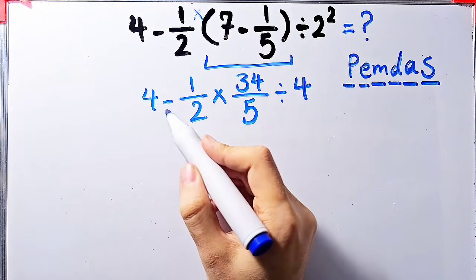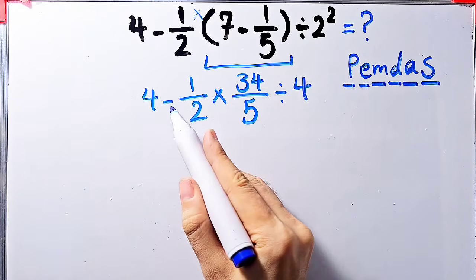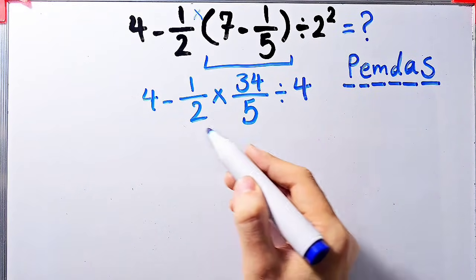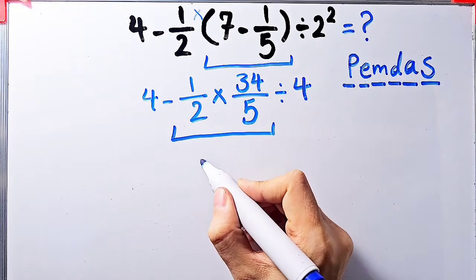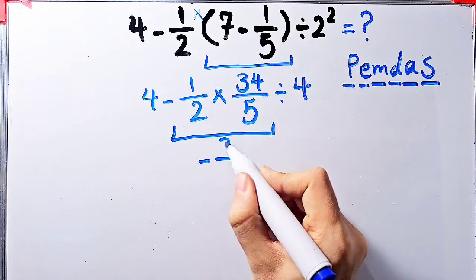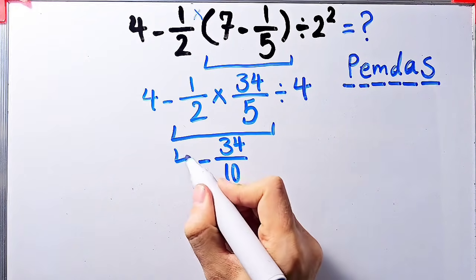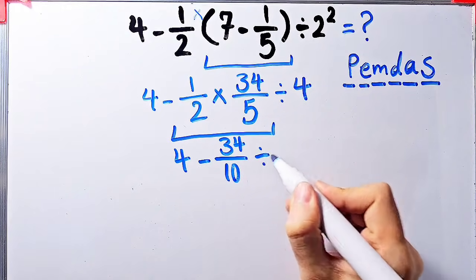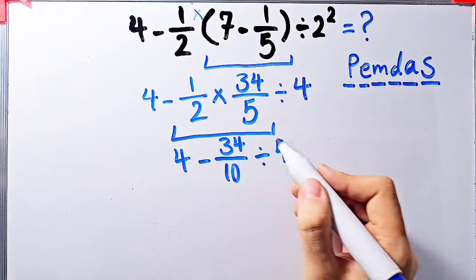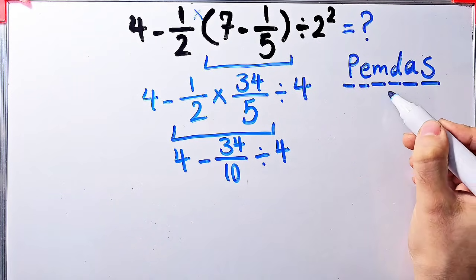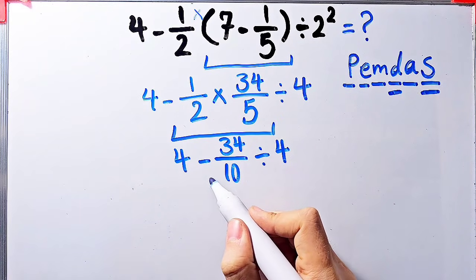Now we have 4 minus 1 over 2 times 34 over 5 divided by 4. Now we have subtraction, multiplication, and division. First, we simplify this multiplication. 1 over 2 times 34 over 5 equals 34 over 10. Now we have 4 minus 34 over 10, then divided by 4. Now we have subtraction and division. First, we do this division because division has higher priority than subtraction. Negative 34 over 10 divided by 4.